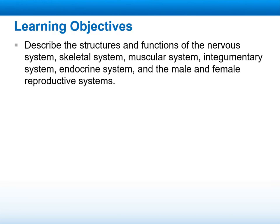In this part, we will start talking about the nervous system, skeletal system, muscular system, integumentary system, endocrine system, and male and female reproductive system. We will be describing the structure and function for each one of them.